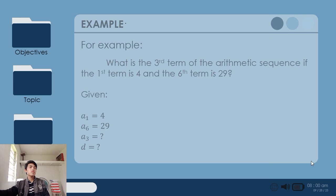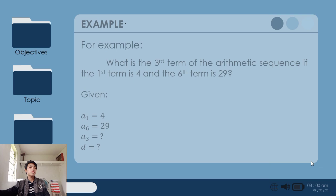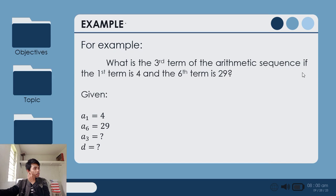So let's have our example. For example, what is the third term of the arithmetic sequence if the first term is 4 and the sixth term is 29? So sa given natin, the first term noted as a sub 1 is equal to 4. Ang sixth term natin, which is a sub 6 is equal to 29. Ang hinahanap natin is yung third term, pero walang nakalagay na difference or hindi given yung difference natin, yung common difference ng ating sequence.